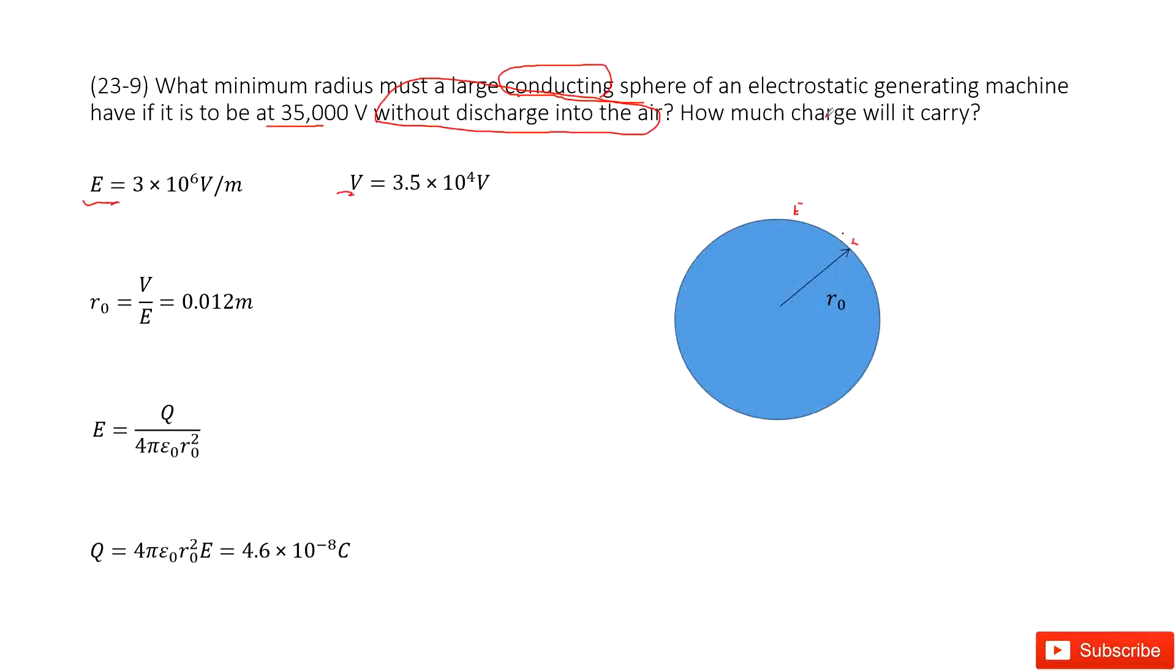In this case, ask you how much charge will it carry? So for the equation, how much charge it carries? We can consider the electric field at the location just at the surface of this object. You can remember what we did in the previous chapter, Gaussian's rule. You can see this is the charge, and this is 4πε₀r₀². This r₀ is the radius for this spherical object.